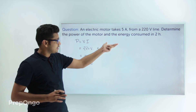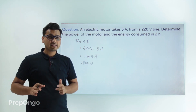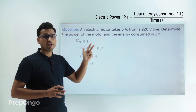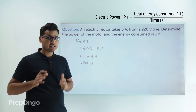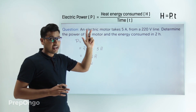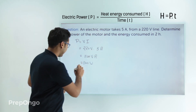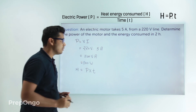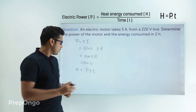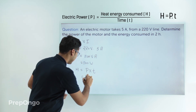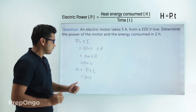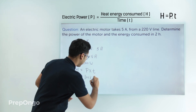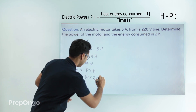Now we have to find out the energy consumed in two hours. We know the basic formula of electric power — electric power is the amount of energy per unit time. So we can write P = H/T, which means H equals P×T. The energy consumed will be the power of the motor multiplied by the time it is working. Just remember that the time is given in hours, so we have to convert it to seconds.